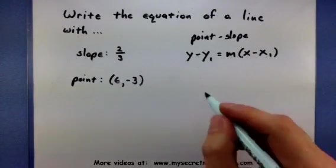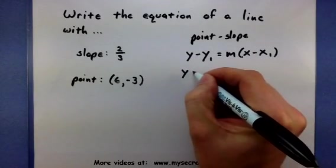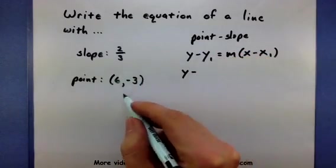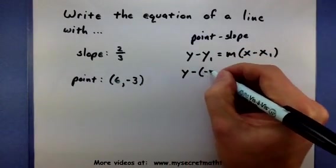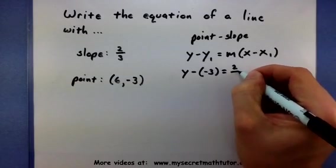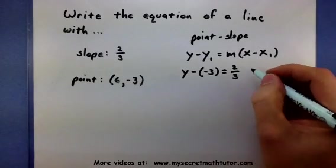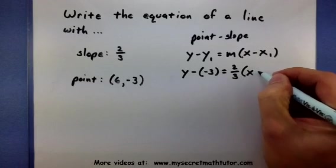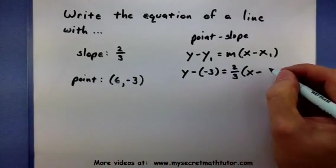Okay so let's give this a try. I'm going to replace y₁ with the y coordinate of my point, in this case negative 3. I'm going to replace the slope with my given 2/3, and last I will replace the x₁ with the x coordinate of the point.